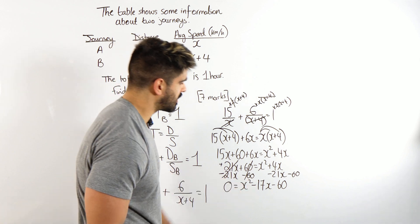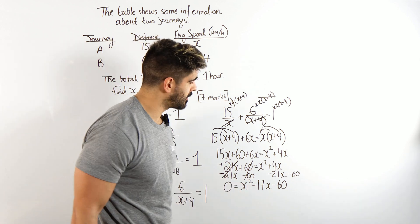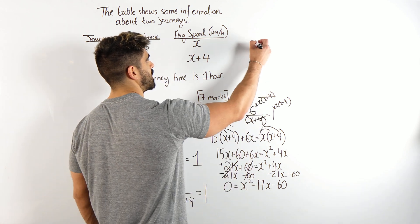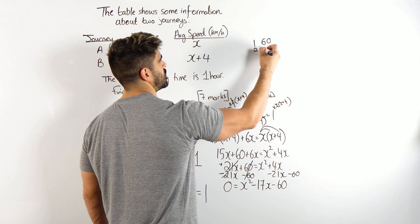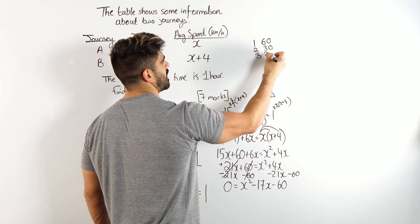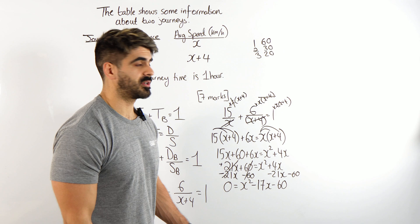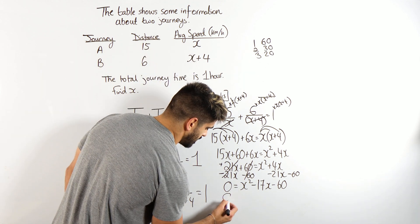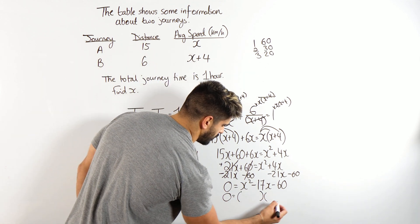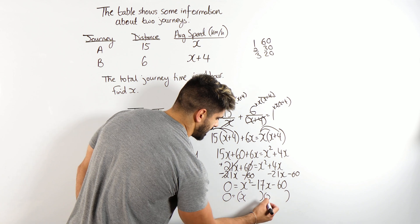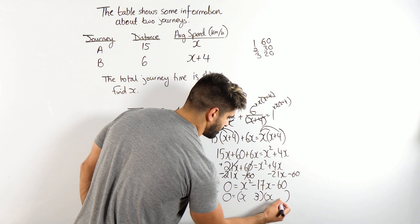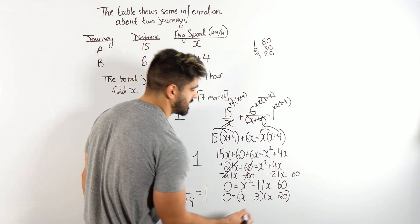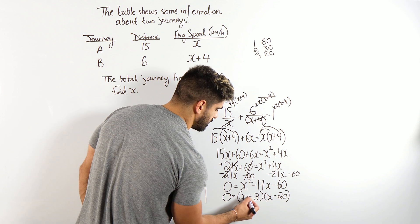Now we need to factorize this. This is a non-calculator paper, so to factorize we're going to have to look at the factors of 60: 1 and 60, 2 and 30, 3 and 20. I already know it's going to be 3 and 20, but it's still good to write them down to see all the factors. So we have (x + 3)(x − 20) — to make minus 17 you need minus 20 plus 3.